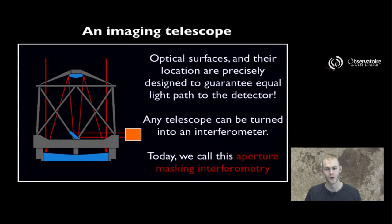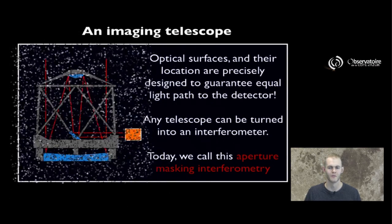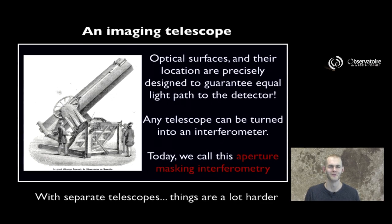This approach, today we call it aperture masking interferometry. But if you think about doing so with separate telescopes separated by very large baselines, it's actually going to be a lot harder to achieve. And it's no wonder that the first actual interferometry experiments were performed hundreds of years before the first two separate telescope experiment was actually done. Separate telescope is a lot harder.